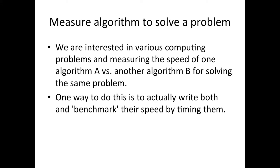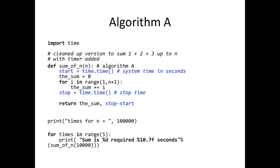So measuring an algorithm, we're going to be mostly interested in measuring the speed. And so we want to look at how do we measure the speed of algorithm A versus another algorithm B for solving a problem. Now one way to do it is actually write both and then benchmark their speed by timing them. And so let's look at that. So we're going to look at how we're going to do that, as well as we're actually going to measure the algorithm we just looked at earlier that was written in both something that was readable and something that was not.